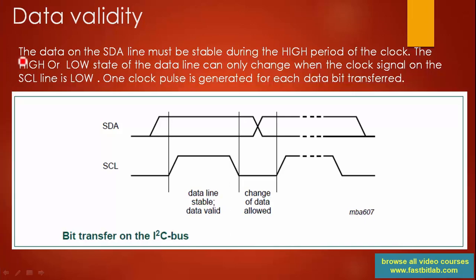Remember that the data on the SDA line must be stable during the high period of the clock. The high or low state of the data line can only change when the clock signal on the SCL line is low. This is an important thing to remember.